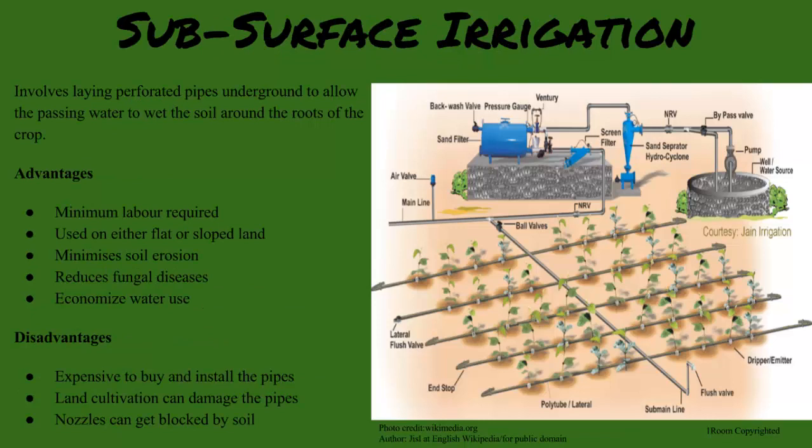Subsurface irrigation involves laying pipes underground for water to pass through the holes and water the plants. The advantages are that it minimizes labor and uses water much more efficiently, but it is very expensive to buy and maintain the pipes.